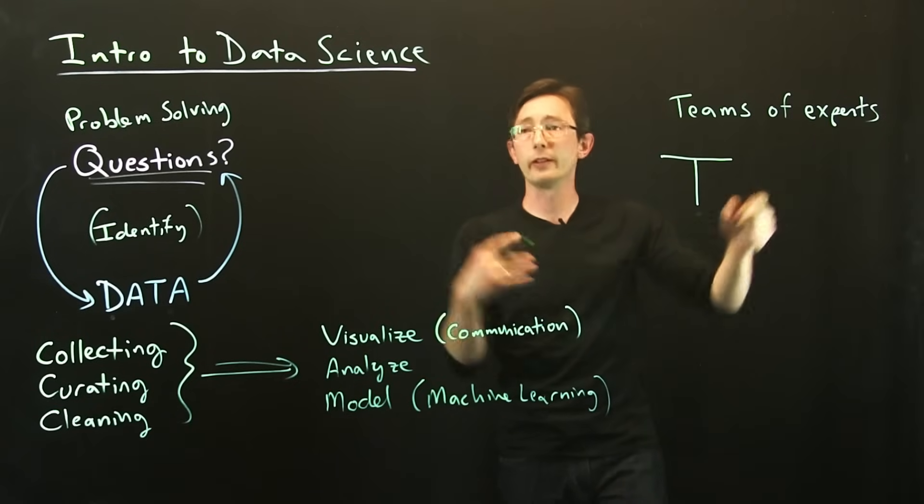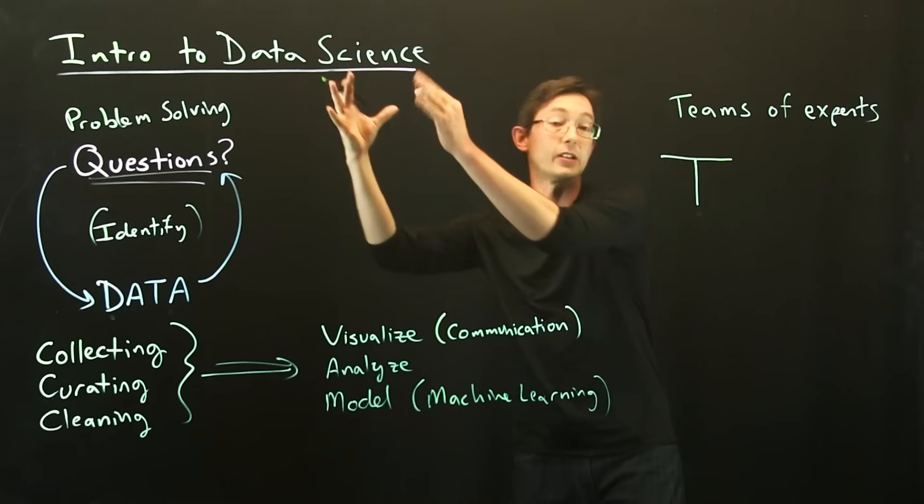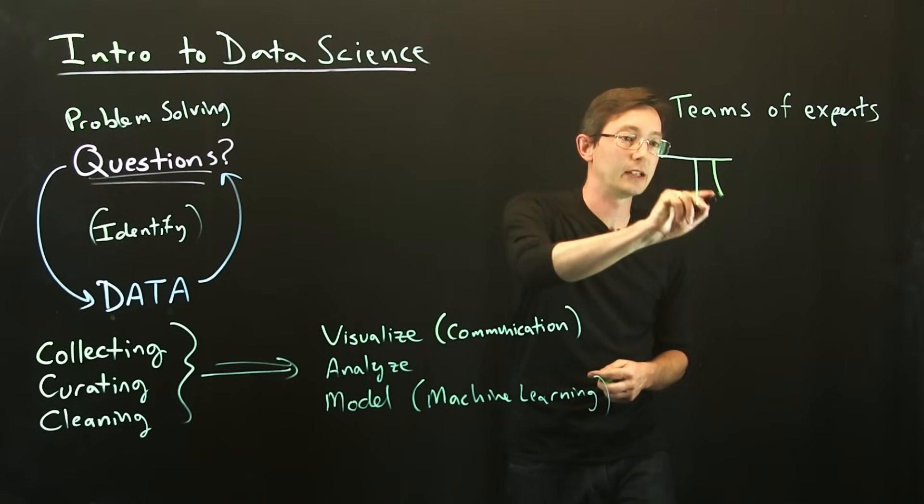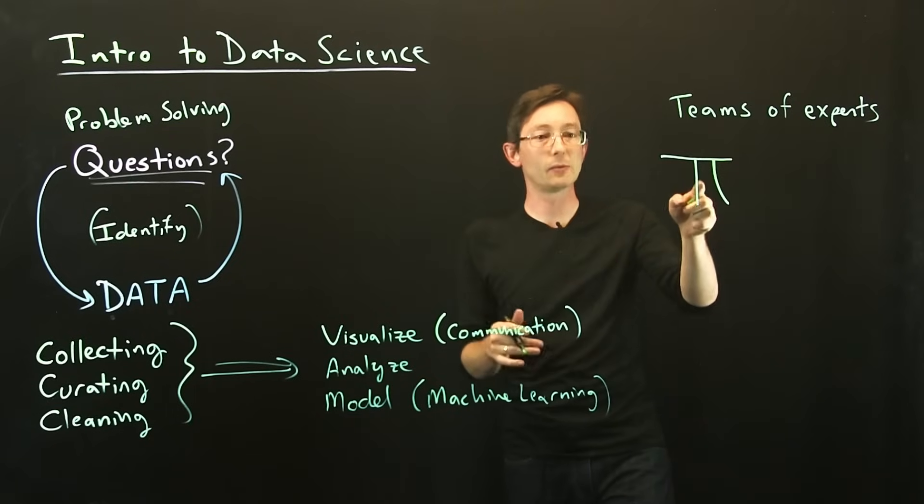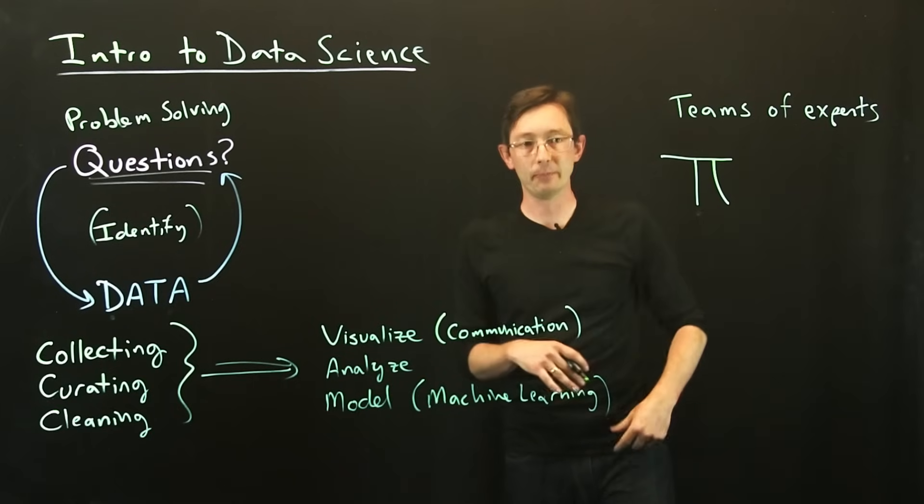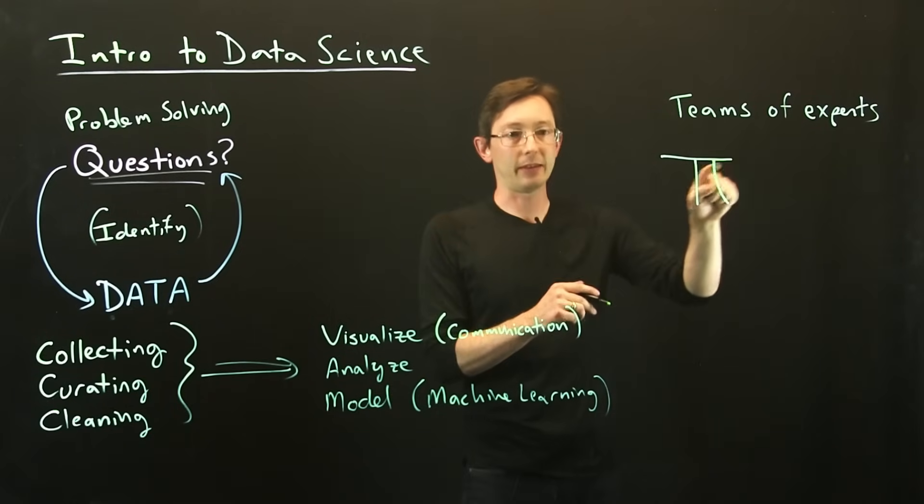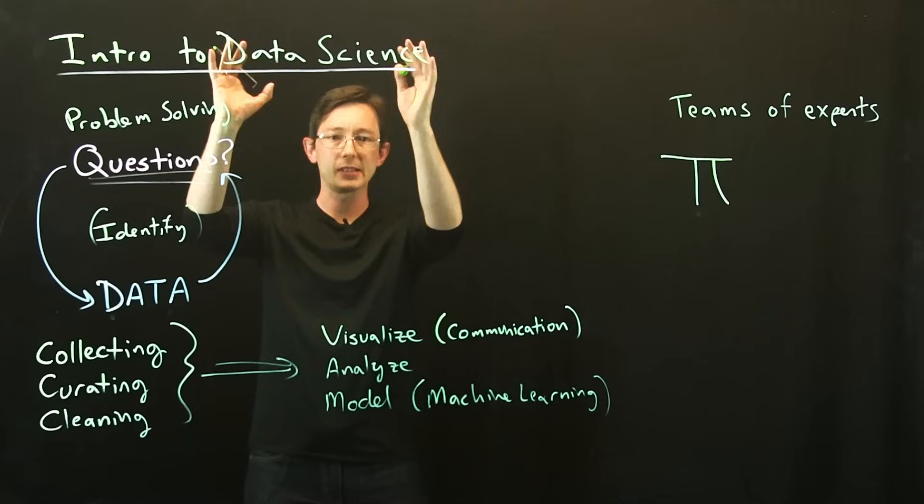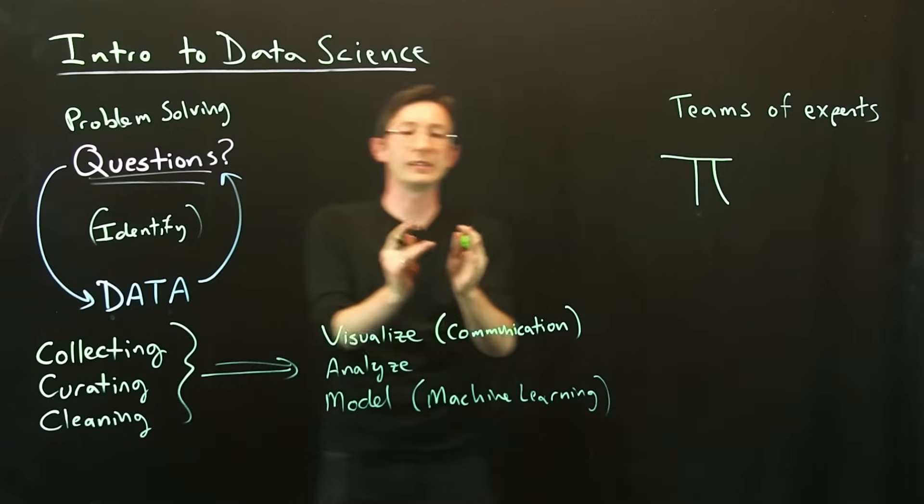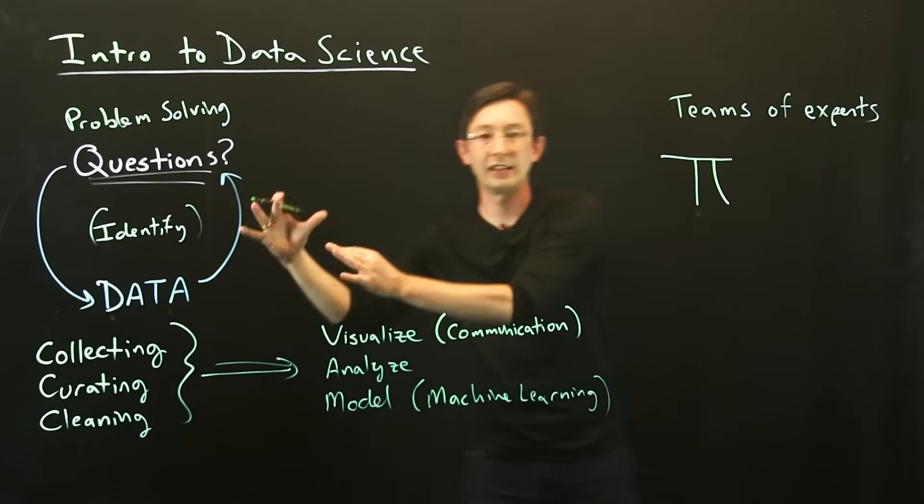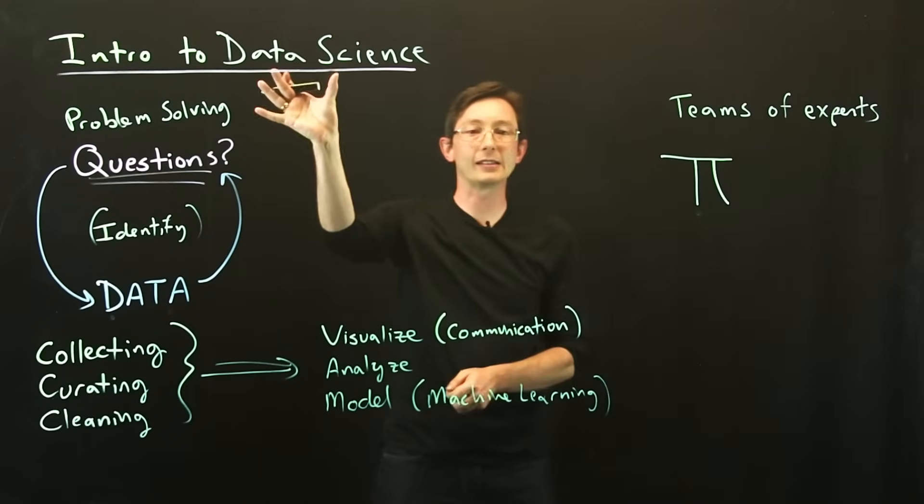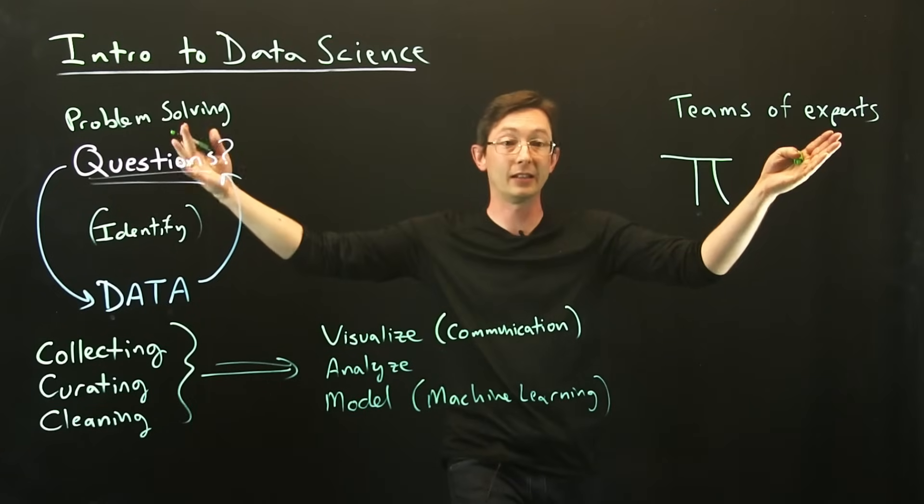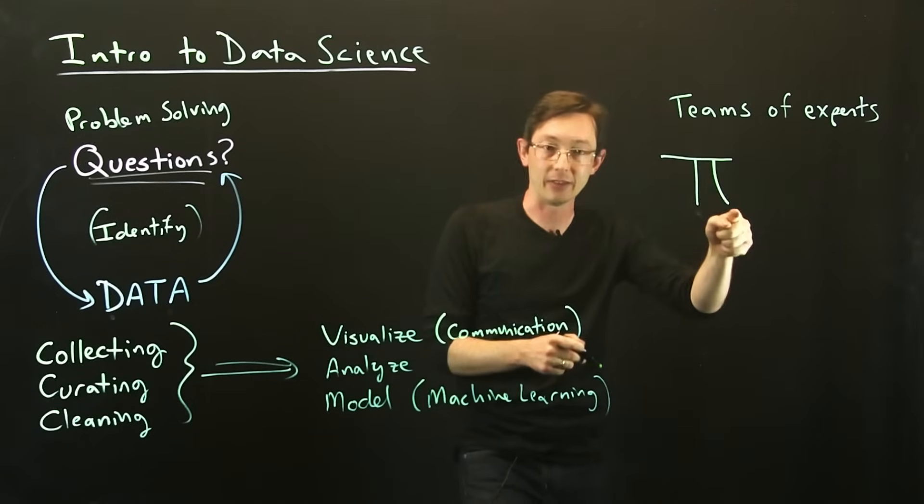But increasingly what we're going to find in the future in these teams of data scientists, or sorry, data scientists on teams, problem solving teams, is that people will need to develop a second depth area in data science. So this is what people call pi-shaped people, pi-shaped experts. So you still need your breadth and your domain expertise, but now you have this data science expertise. And so I really want to emphasize data scientists are not just going to be sitting across a firewall from the people collecting the data and solving the problems. You want data scientists on your team in the room helping you make decisions.